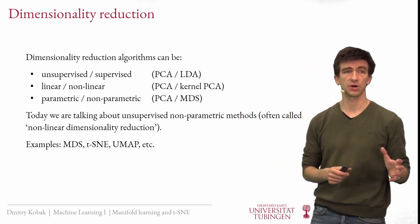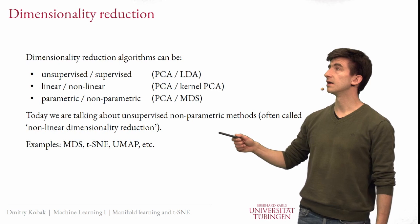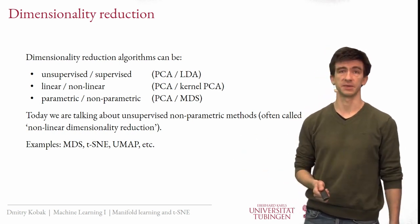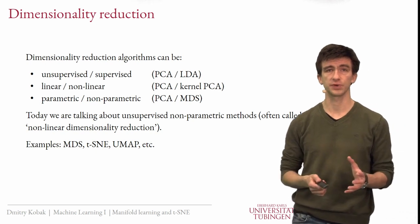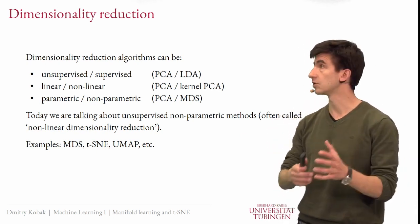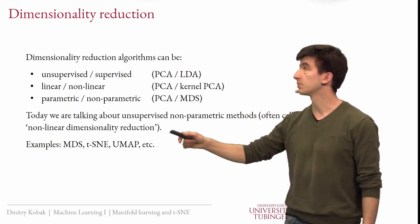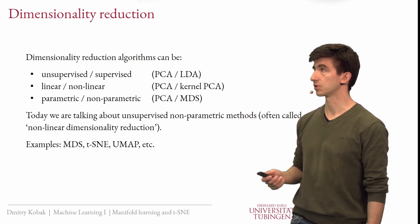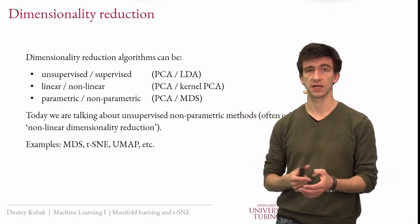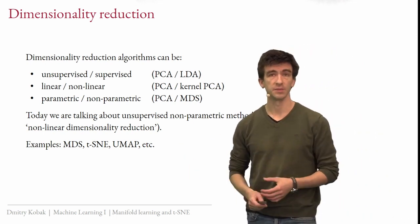A note on terminology: often in the literature, methods like T-SNE are called nonlinear dimensionality reduction. I find this a bit sloppy because there is no mapping that can be linear or nonlinear at all. But they are often called that. Examples of these methods are multidimensional scaling, T-SNE, UMAP — a more recent algorithm — and many others.